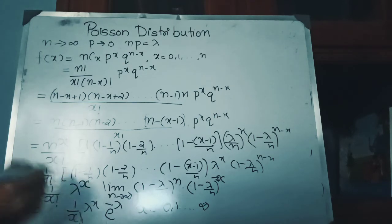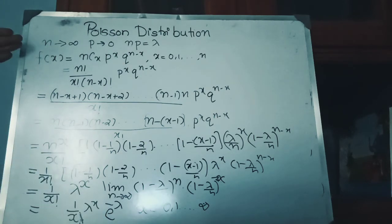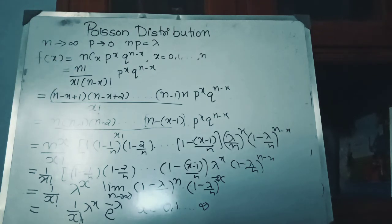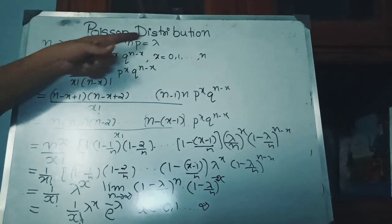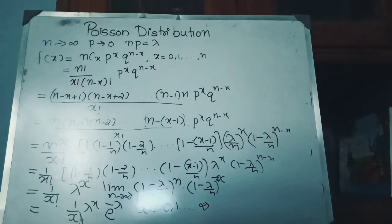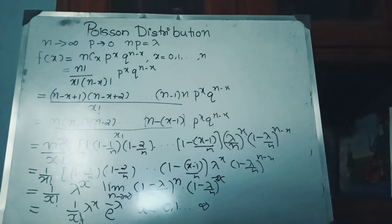So we began with the binomial distribution PDF: nCx · p^x · q^(n−x), for x = 0, 1, 2, ..., n. We expanded it, then applied the limit n → ∞ with np = λ, and obtained the PDF of the Poisson distribution. This shows that Poisson distribution is the limiting case of binomial distribution.